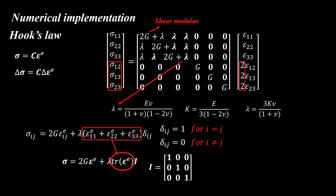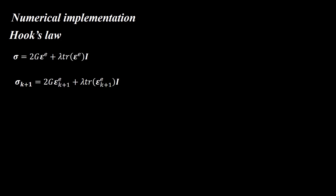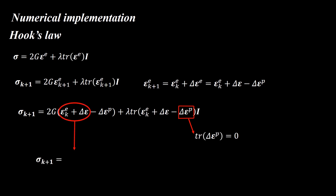This equation is valid for any strain, so we apply it at the end of the increment. We write the elastic strain at the end of the increment based on the strain at the beginning of the increment, plus the total and plastic strain increments. Rewriting the equation using these three terms instead of epsilon at k+1, and noting that the trace of the plastic strain increment is zero due to plastic incompressibility, rearranging gives us the updated elastic strain expression.